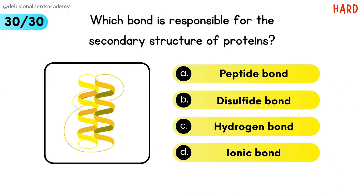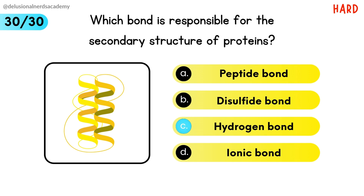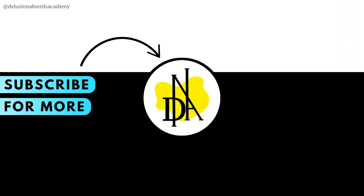Which bond is responsible for the secondary structure of proteins? Hydrogen bond is the correct option.